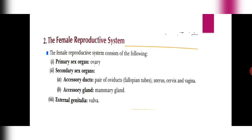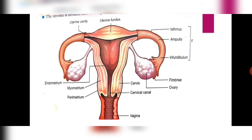Let us now discuss the female reproductive system. Similar to the male reproductive system, we will discuss the primary sex organ — the ovary — the accessory ducts which are the fallopian tube, uterus, cervix and vagina, the accessory glands — the mammary glands — and the external genitalia, i.e., the vulva. As you can see in the diagram, there are a pair of ovaries present in the female reproductive system. The ovaries are the primary sex organs, responsible for the production of ovum and two very important female hormones, progesterone and estrogen. They are attached to the pelvic wall by ligaments.